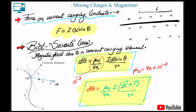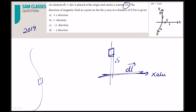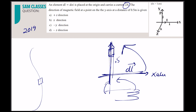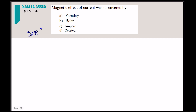In Biot-Savart law, the length element dl is along x and the radius vector r is along y. Doing the cross product dl × r: using the right-hand rule, align palm with x and curl toward y — the thumb points in the positive z-direction. So the magnetic field at that point is in the positive z-direction.